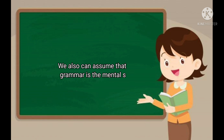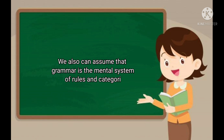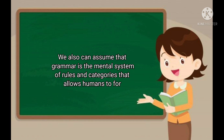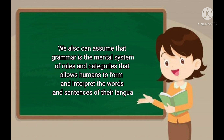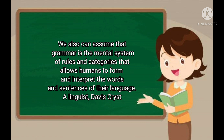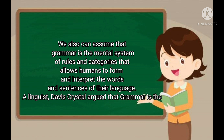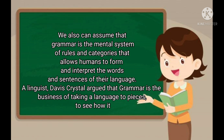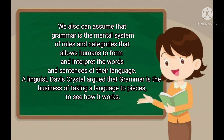What we call grammar is simply a reflection of a language at a particular time. We can also assume that grammar is the mental system of rules and categories that allows humans to form and interpret the words and sentences of their language. A linguist, David Crystal, argues that grammar is the business of taking a language to pieces to see how it works.